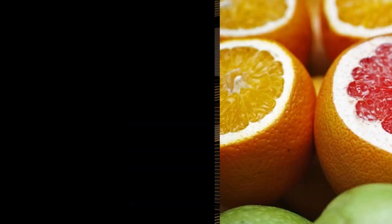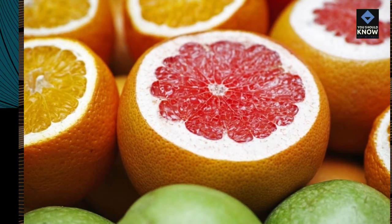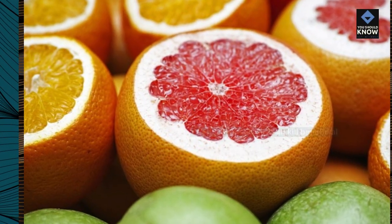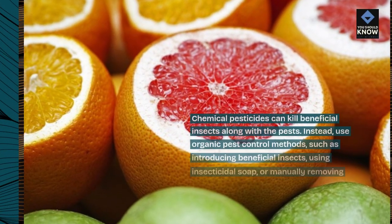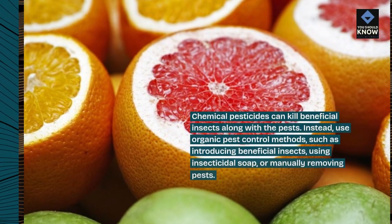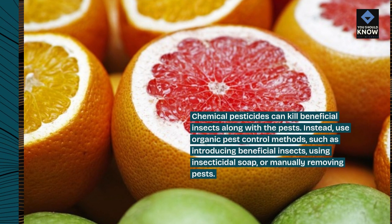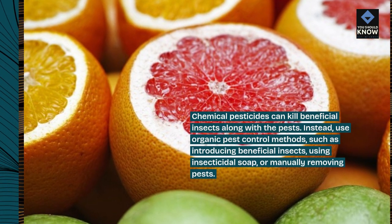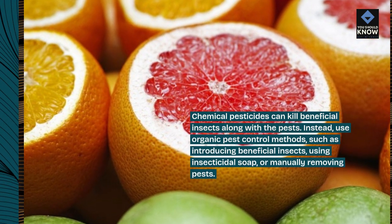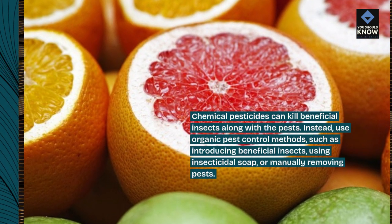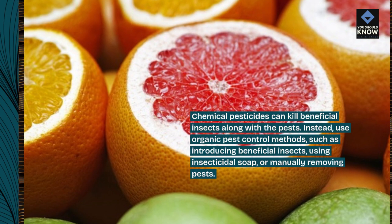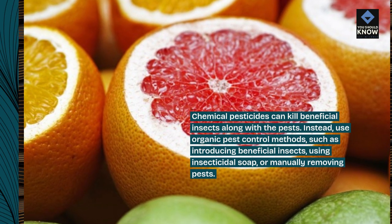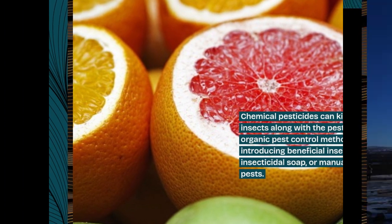Tip 3: Avoid chemical pesticides. Chemical pesticides can kill beneficial insects along with the pests. Instead, use organic pest control methods, such as introducing beneficial insects, using insecticidal soap, or manually removing pests.